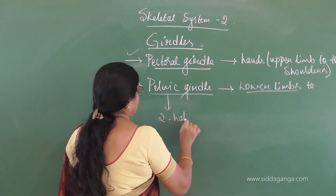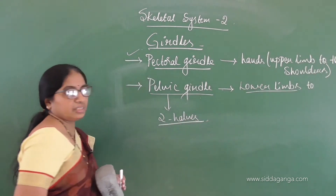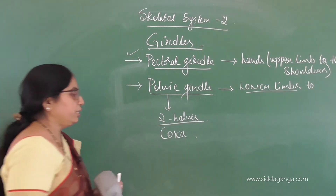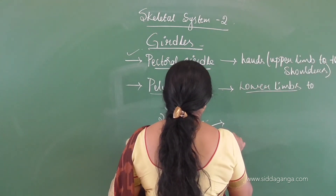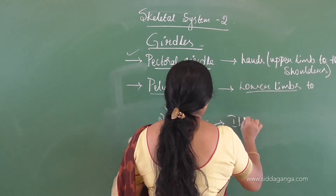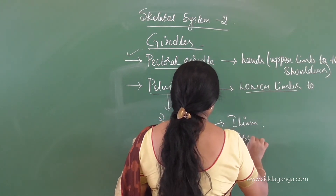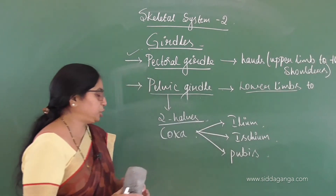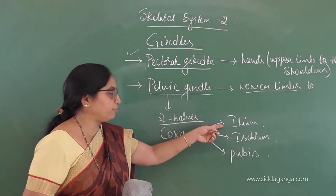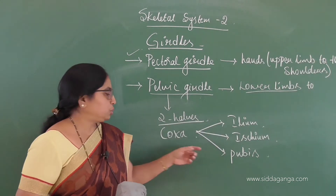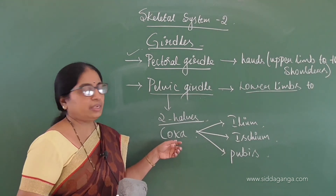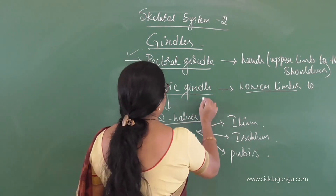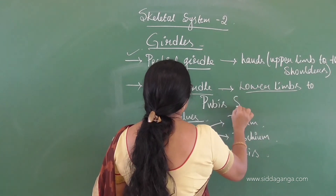The pelvic girdle is also made up of two halves. It is formed by a big bone called the coxa, and this coxa bone is formed by the fusion of three important bones: the ilium, ischium, and pubis. The two coxa bones join together to form a framework on the ventral side of the body called the pubic symphysis.